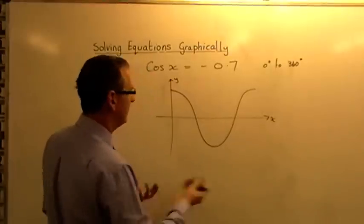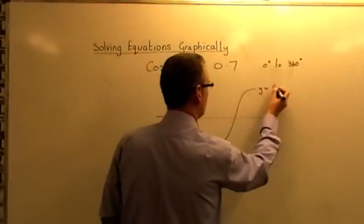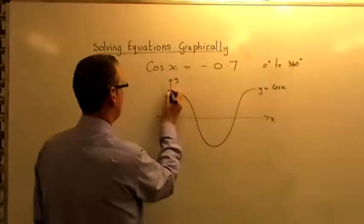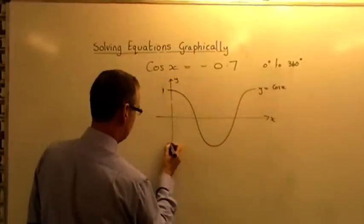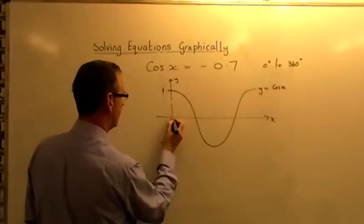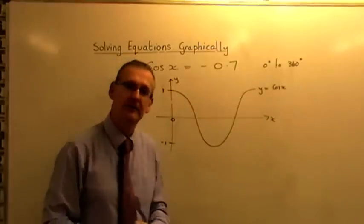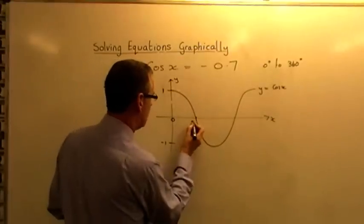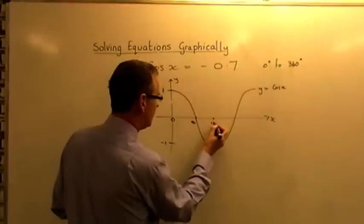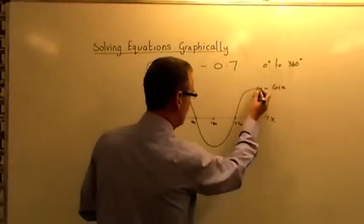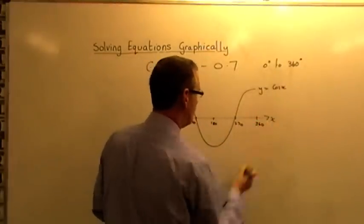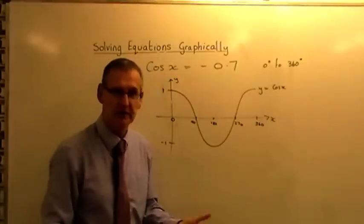Once you've done that, you can label it if you want. Y equals cos x, like so. And put on the values 1, and down here is minus 1. And then, if you want to put on the angle values here, that would be 0, that would be 90, that would be 180, that would be 270, and right at the end, that would be 360. This is just a sketch to show you what's going on.